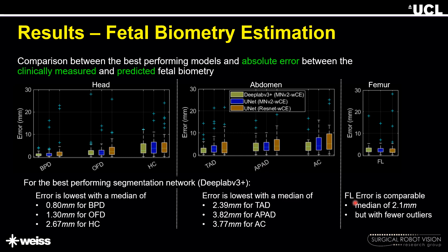In the case of femur length, the obtained errors were comparable across models, but in the case of DeepLab V3+, the number of outliers was fewer compared to the other two methods.